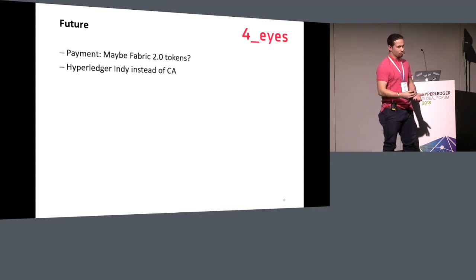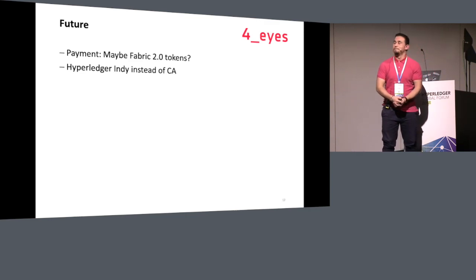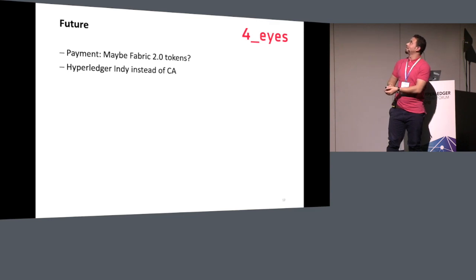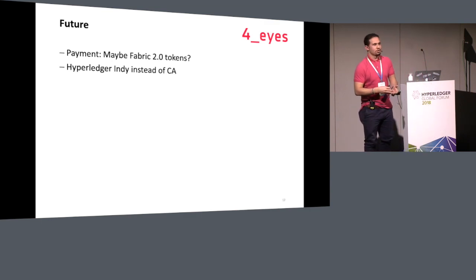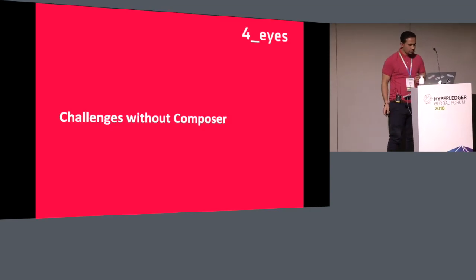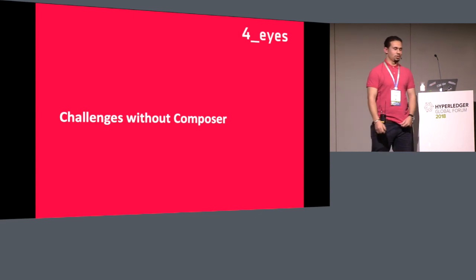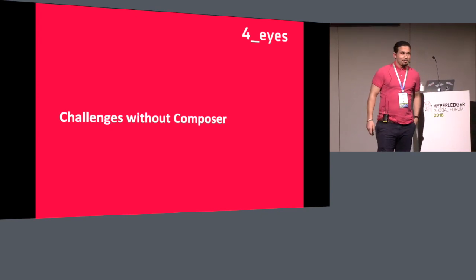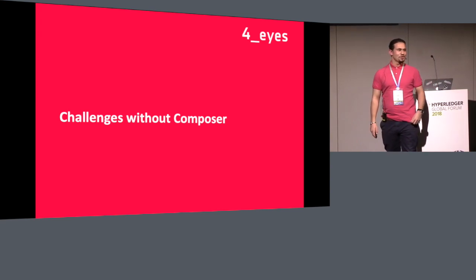Composer is not going to be supported anymore, which makes me sad because I love it — it makes everything very easy and you don't need to write a lot of code. We will show you some prototypes without Composer. The second step is Hyperledger Indy instead of the certificate authority component. The vision of Hyperledger is to make the different frameworks compatible with each other, so maybe it will work.